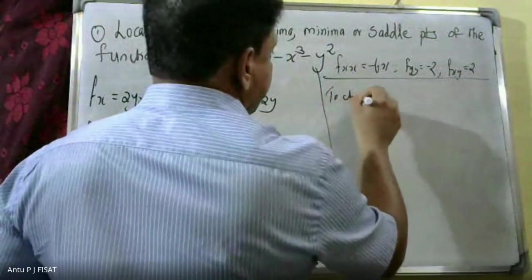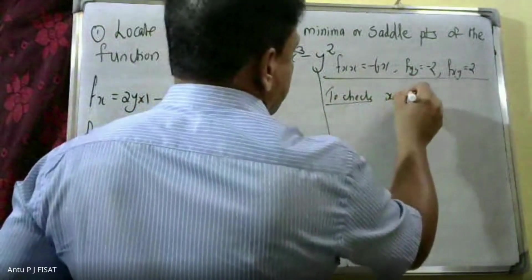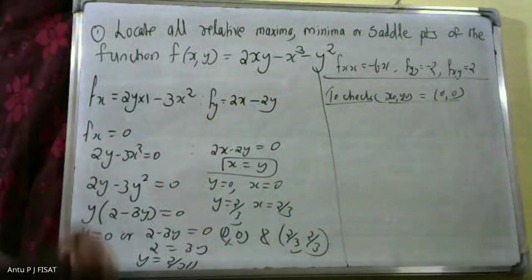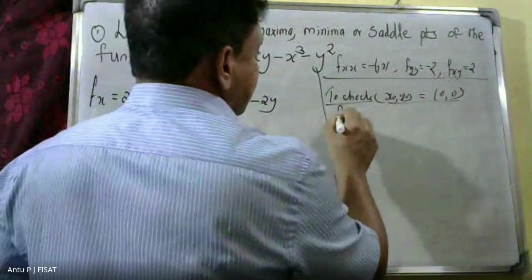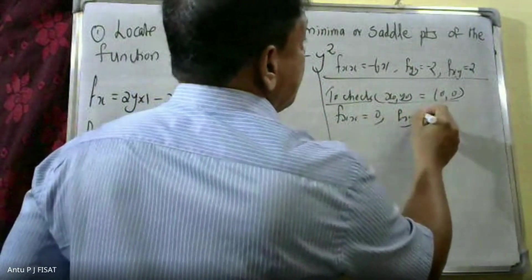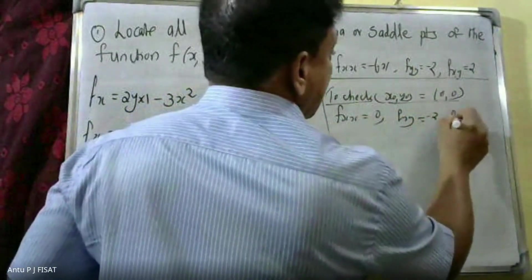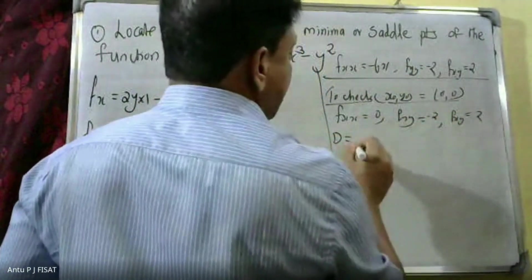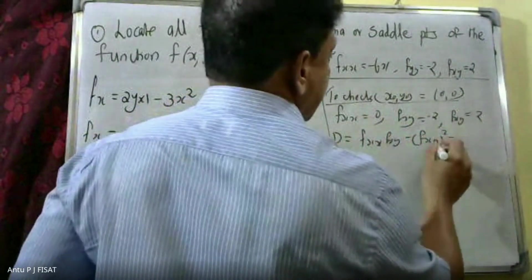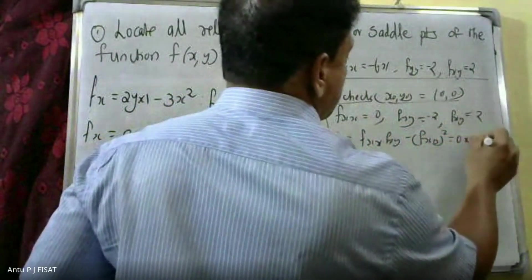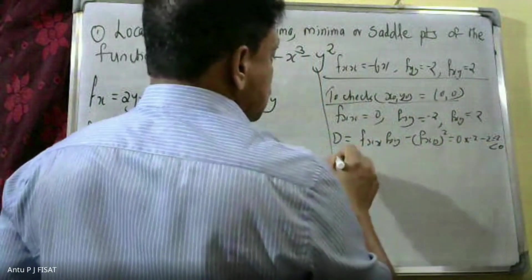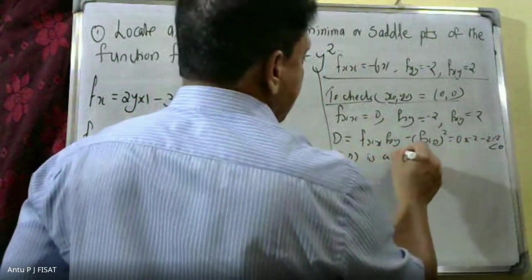First, check the critical point (0, 0). At (0, 0): fxx equals 0, fyy equals minus 2, fxy equals 2. Calculate D equals fxx times fyy minus (fxy) squared, that is 0 times minus 2 minus 4, which gives minus 4, that is less than 0. Therefore (0, 0) is a saddle point.